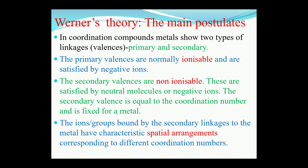The second point is that the primary valences are normally ionizable and are satisfied by negative ions — anions. The third point is that the secondary valences are non-ionizable and these are satisfied by neutral molecules and negative ions. The secondary valence is equal to the coordination number and is fixed for the metal. The fourth point is that the ions or groups bound by the secondary linkages to the metal have a characteristic spatial arrangement corresponding to the different coordination numbers.